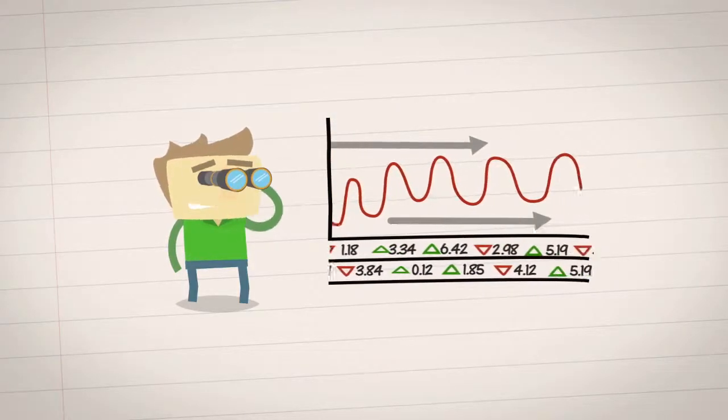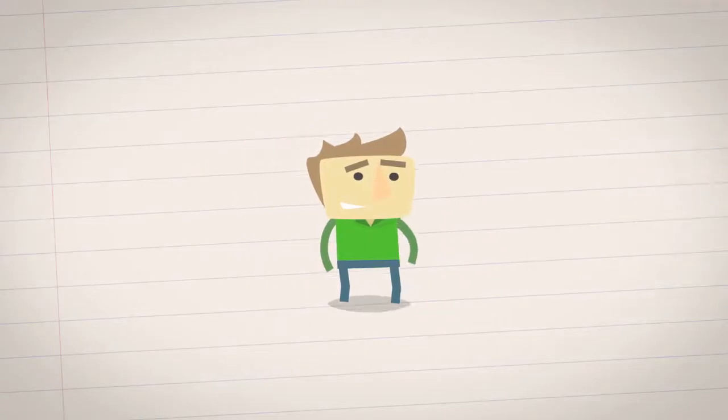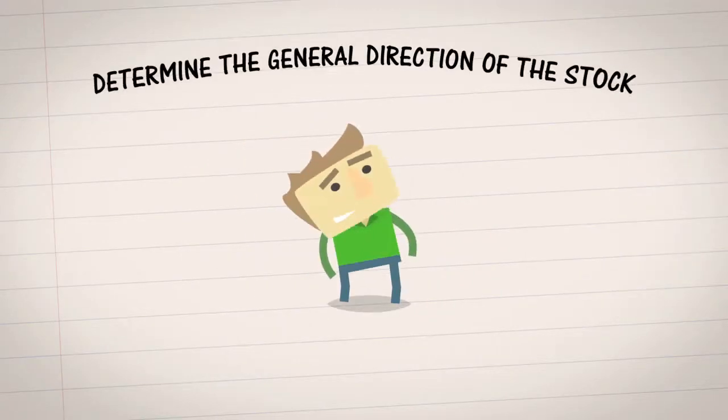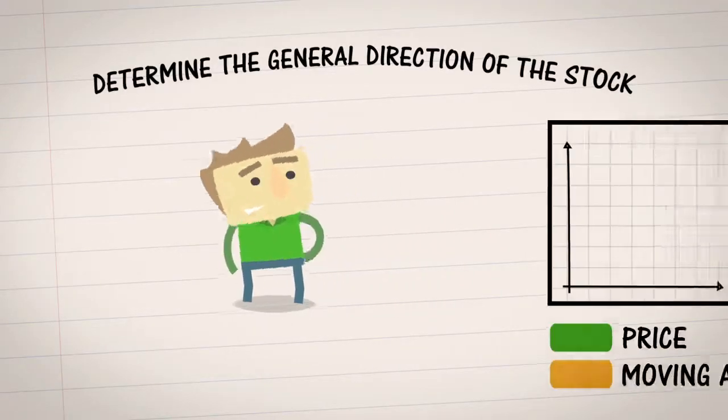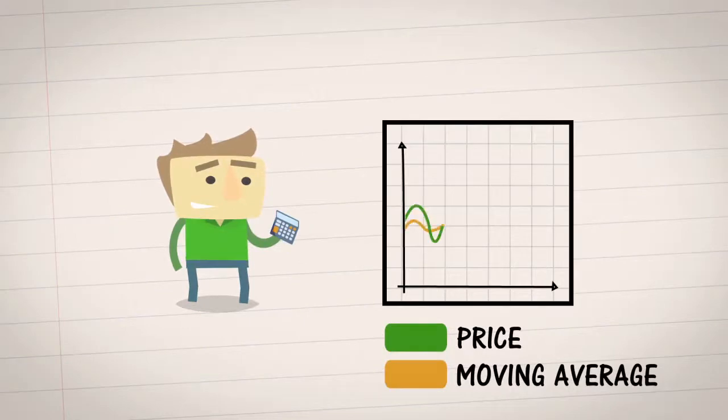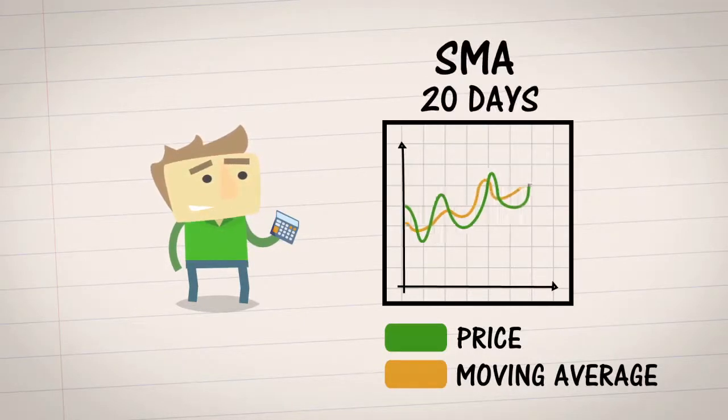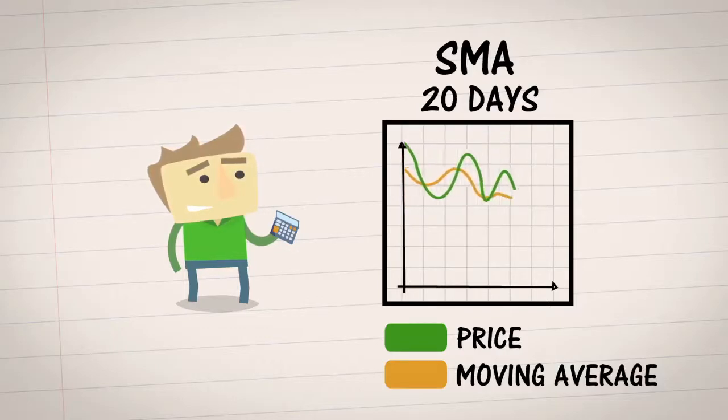Another way to identify the market trend is to look beyond the daily price fluctuations and determine the general direction of a stock. You do this by calculating an average. For example, a 20-day simple moving average, or SMA, is an average of the past 20 days of closing prices which moves or updates on a daily basis by incorporating the latest prices.